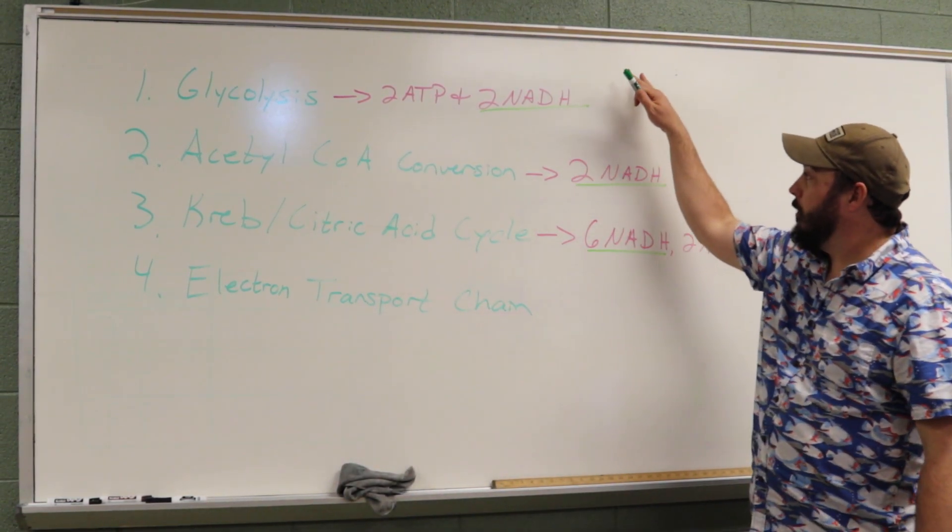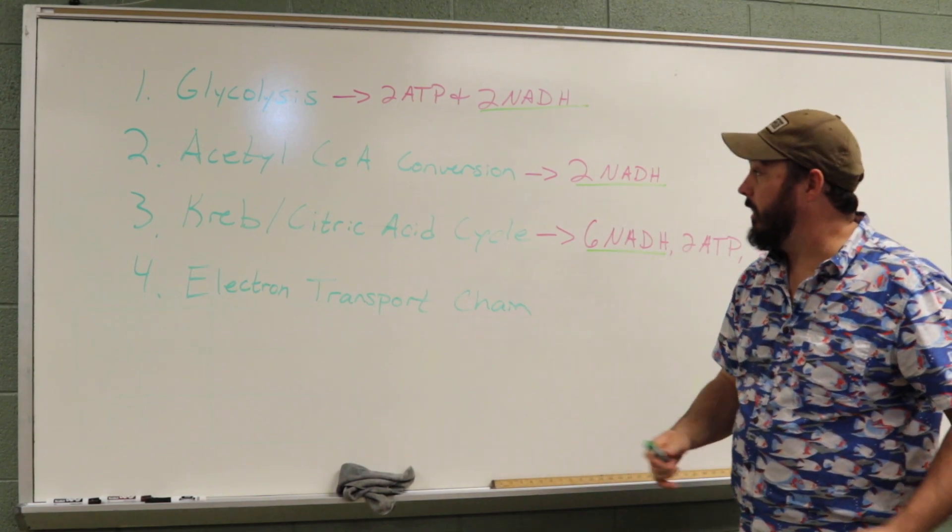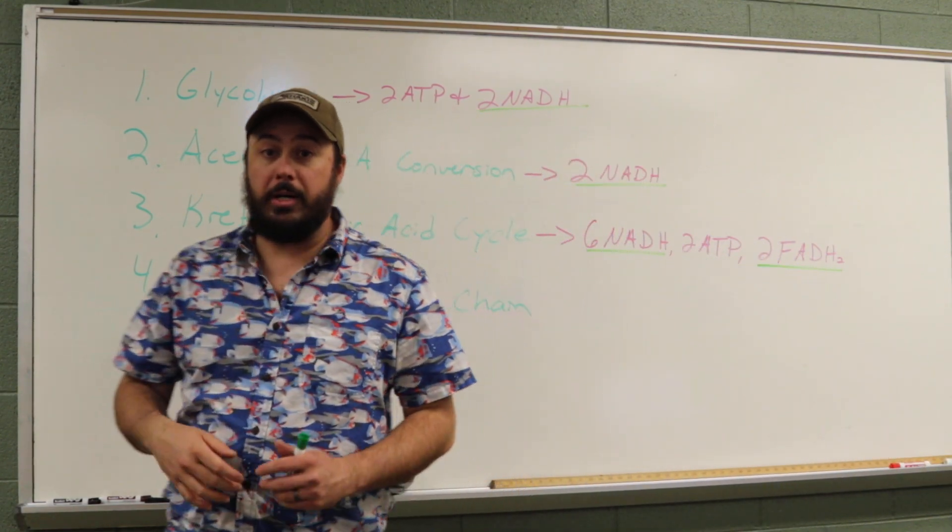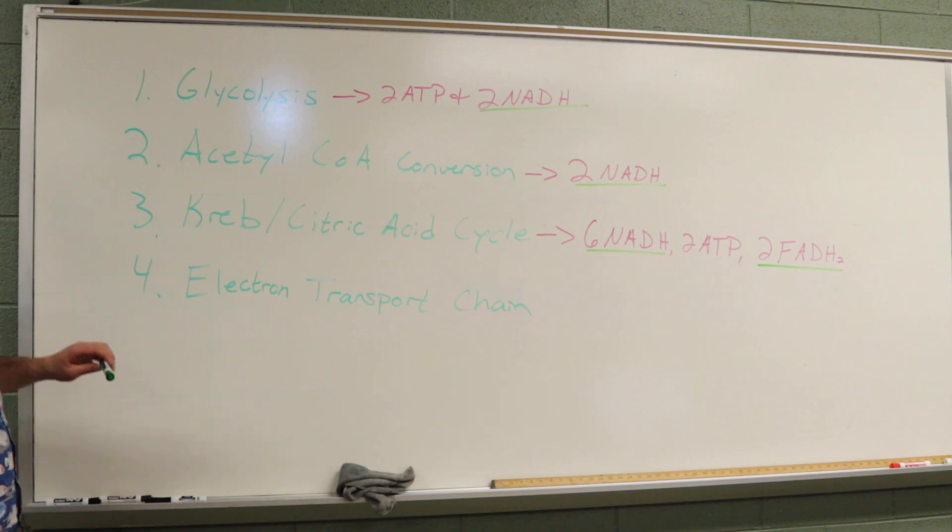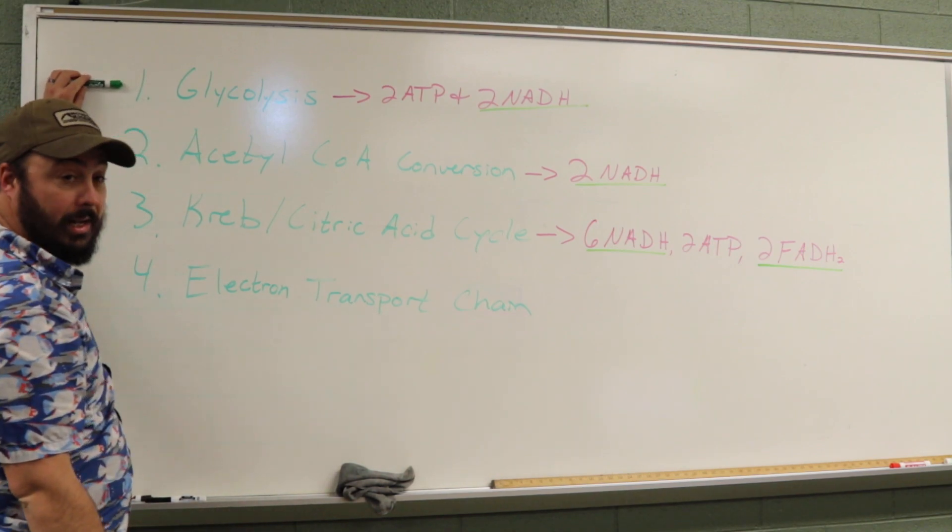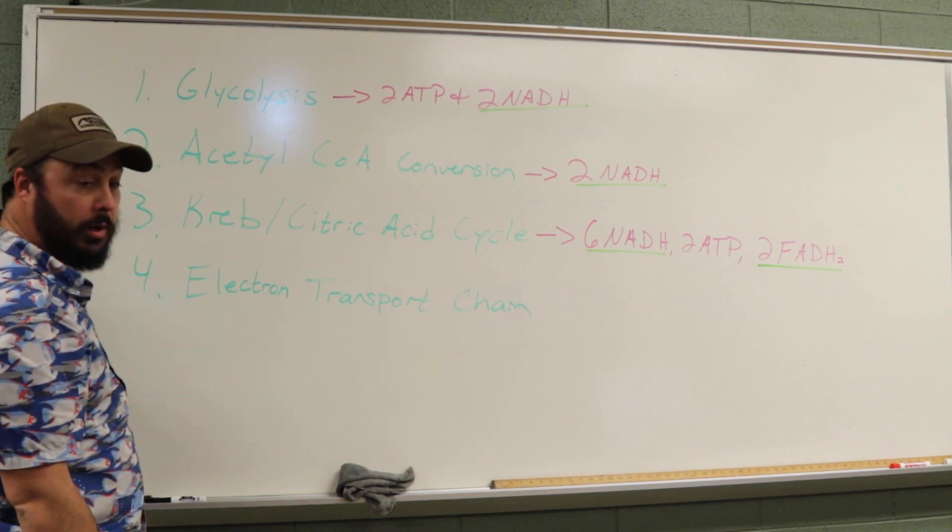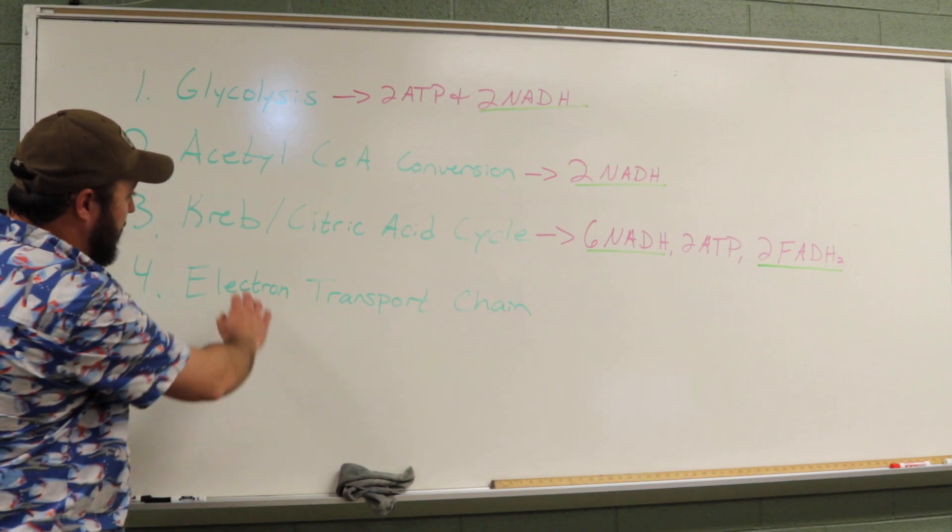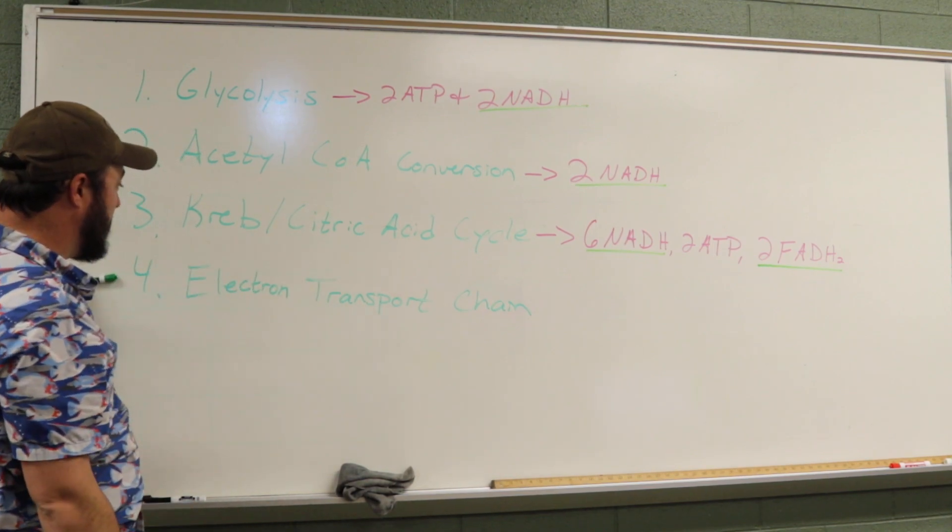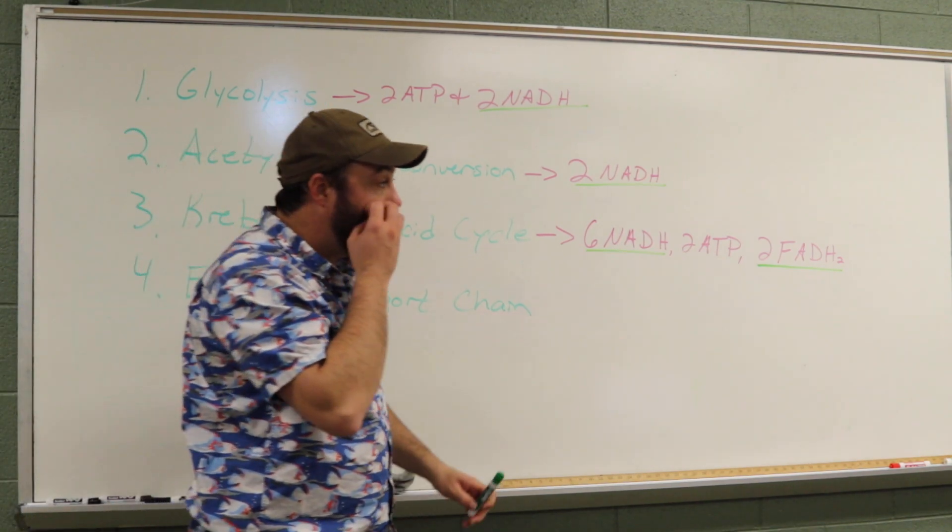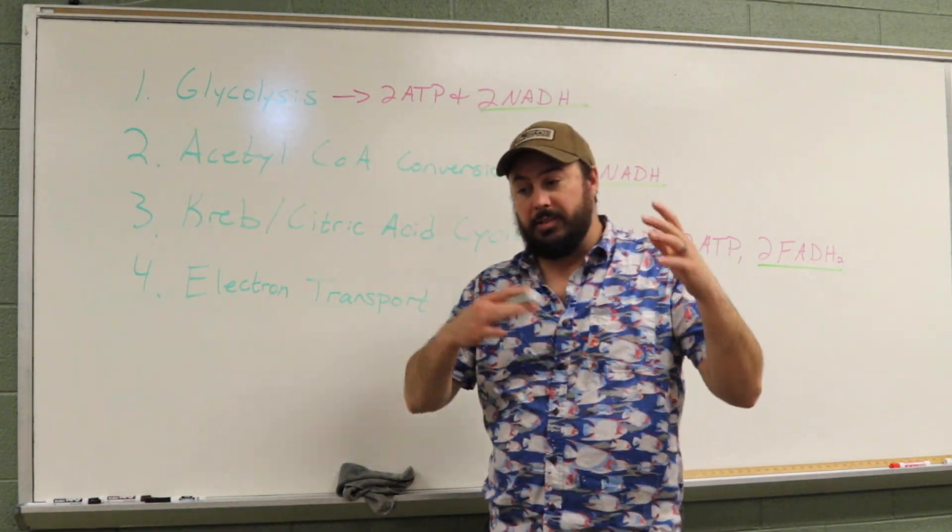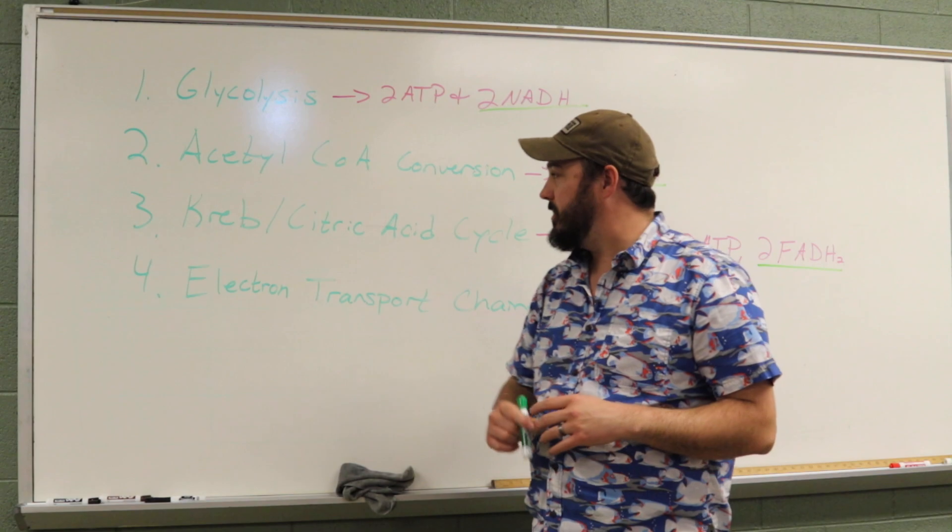Hey guys, so we're going to go through a quick summary here of cellular respiration. Cellular respiration can be summarized into four major steps. One is glycolysis, second is acetyl-CoA conversion, the third is the Krebs or citric acid cycle, and then fourth is the electron transport chain. Each one of these we've got to understand the inputs and outputs and what the major goal of each step is.